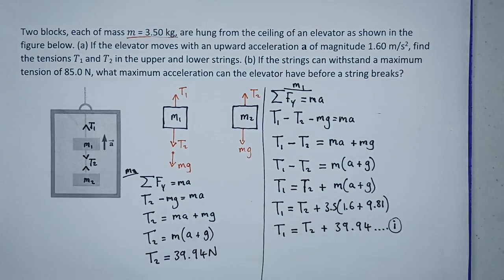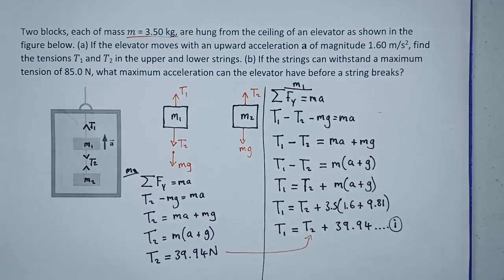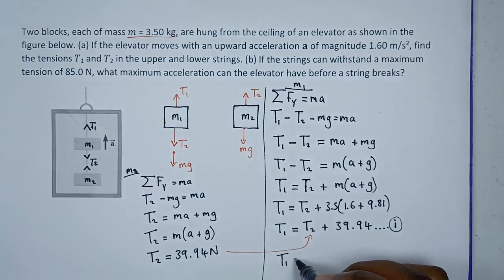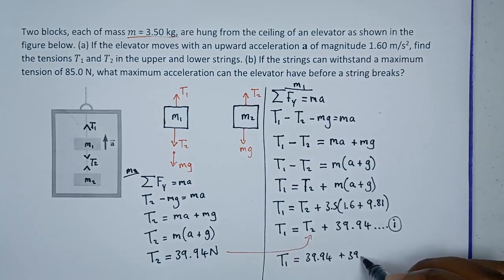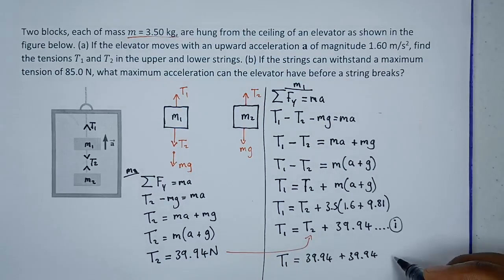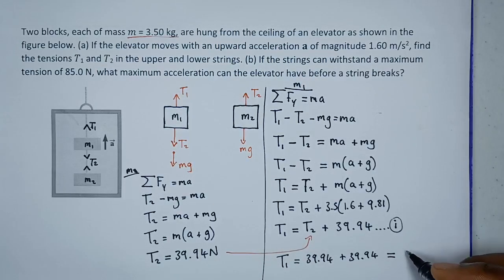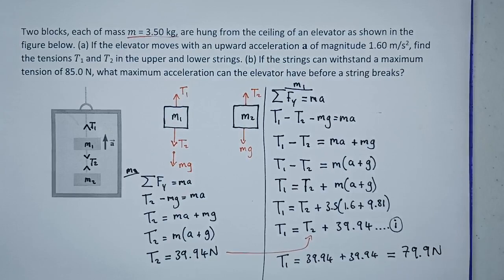Now that we have T2, we can find T1. Substituting into equation one: T1 = T2 + 39.94 = 39.94 + 39.94. So T1 = 79.9 newtons, which we can round to approximately 80 newtons. So we have both tension values.